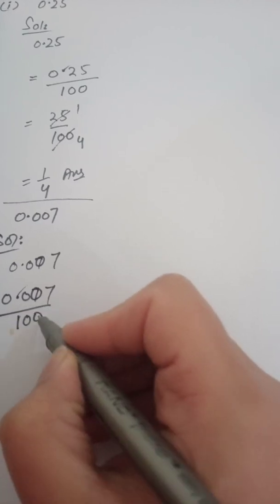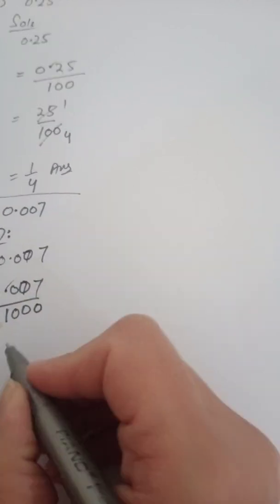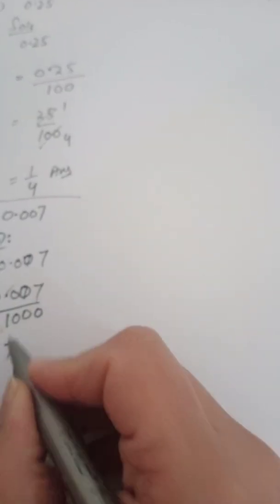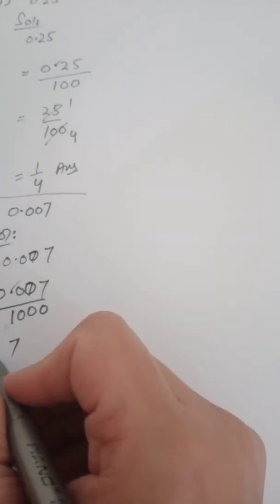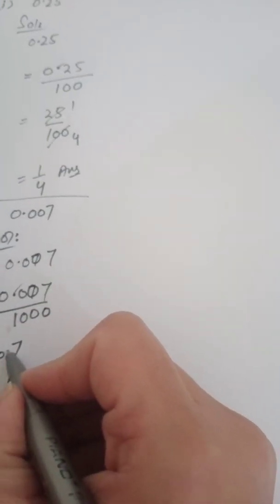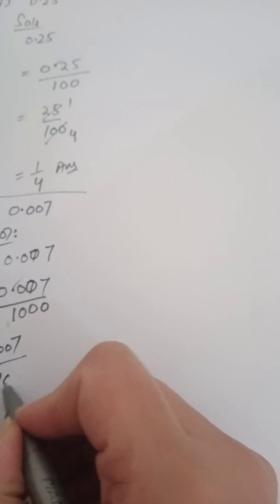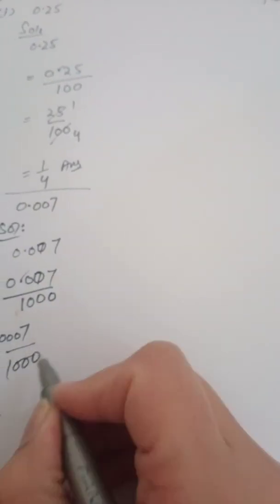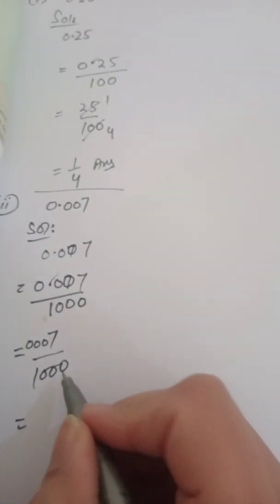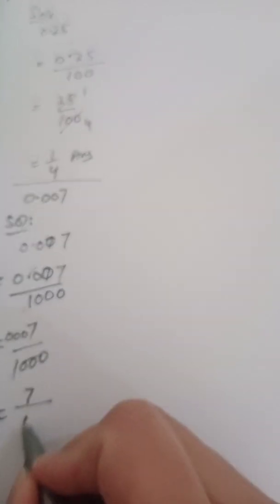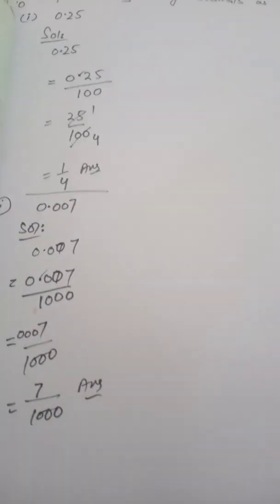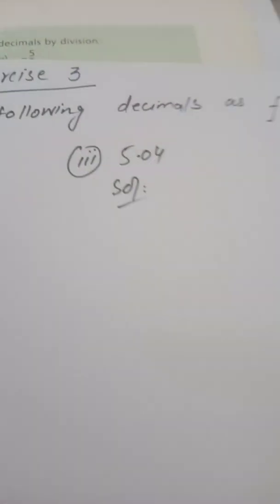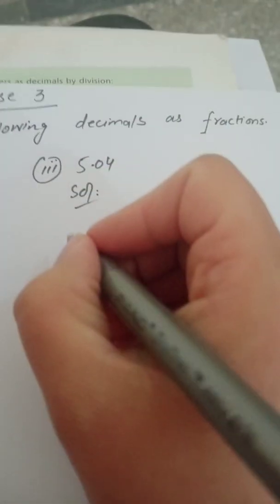To remove the decimal point, we place 1 below and add zeros: one zero for each digit after the point, giving three zeros in total. So we have 7 upon 1000. The zeros before 7 in the numerator are meaningless. The final answer is 7 upon 1000.